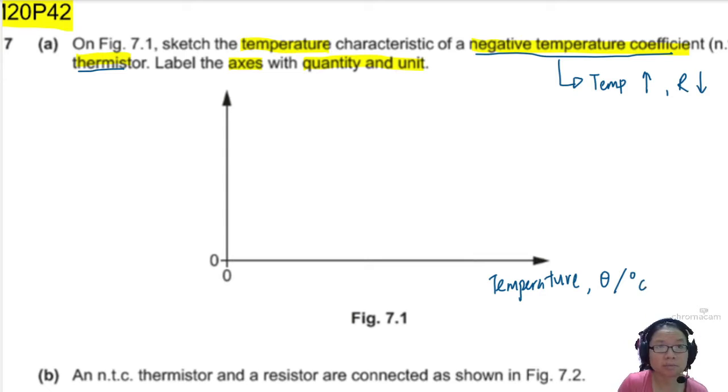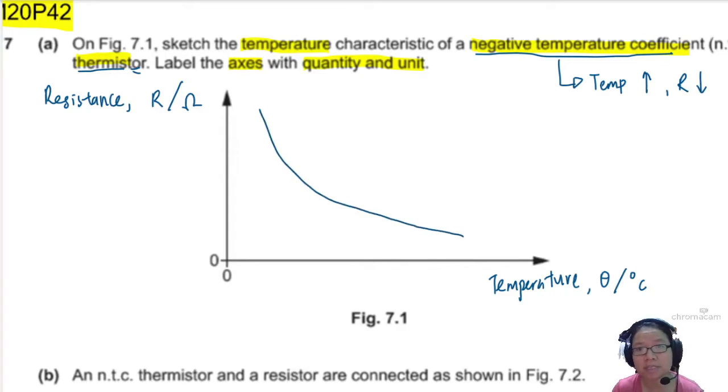And the other side would be thermistor. So it has to be a resistor. So resistance. Maybe this is R. I guess the unit you could put ohm or kilo ohm. And this one will decrease and it will decrease with a decreasing gradient. So it's getting less and less steep over time, something like this.